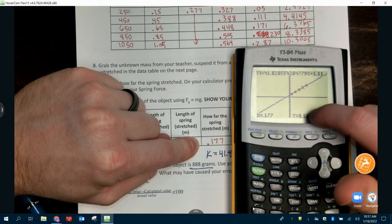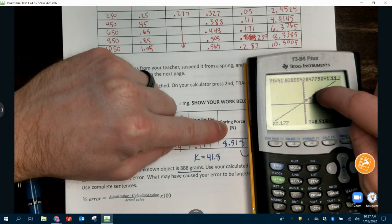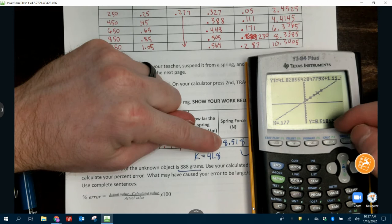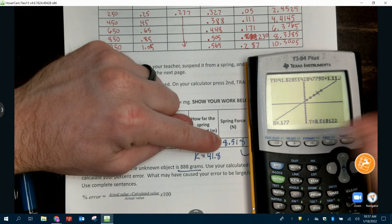And it's going to return a Y value. This Y value is the spring force because it's telling me what the intercept is. The bottom, the number that I gave it was how far it stretched. The number that it's at in Y is the other point, and that's 8.518 for mine.